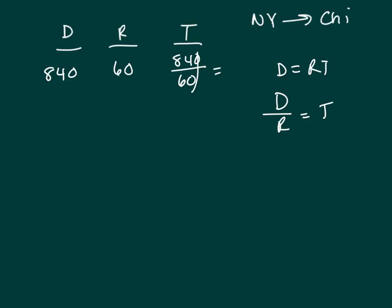And then cross out those zeros, you're dividing by 10, now divide through by 2, that would be 42 over 3.